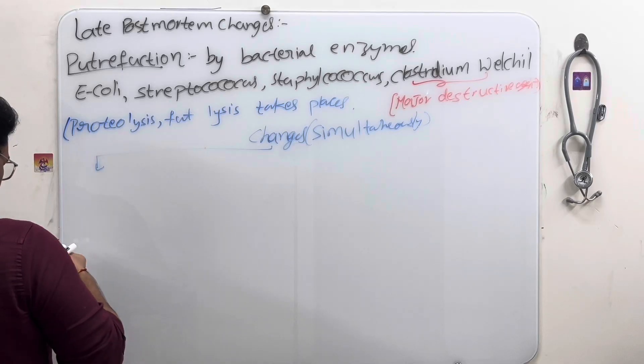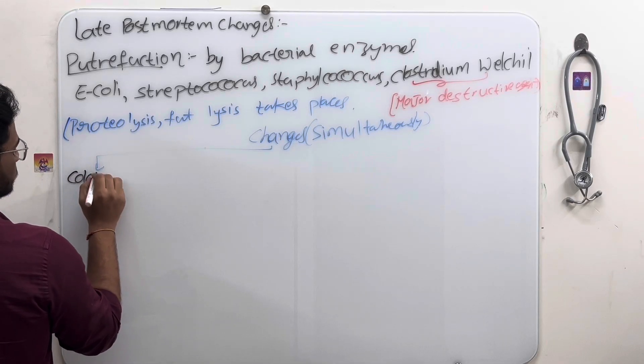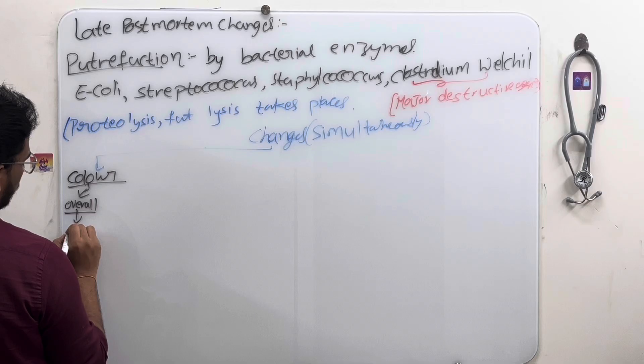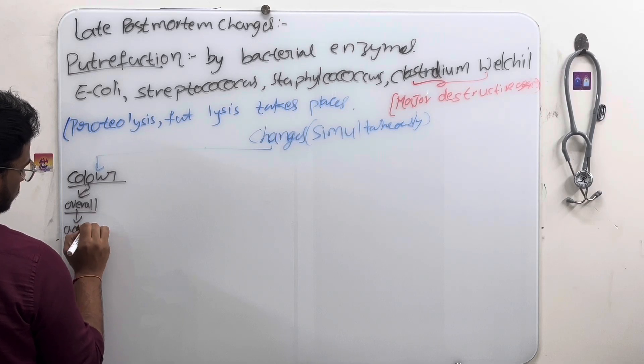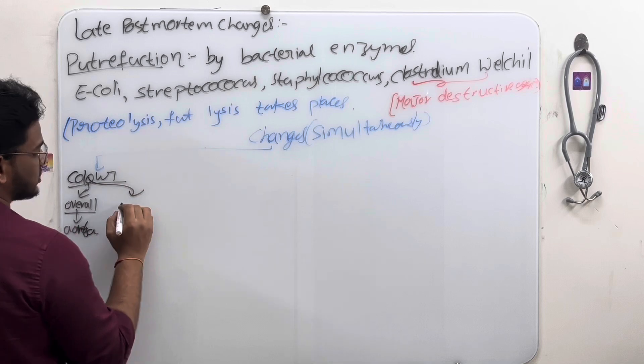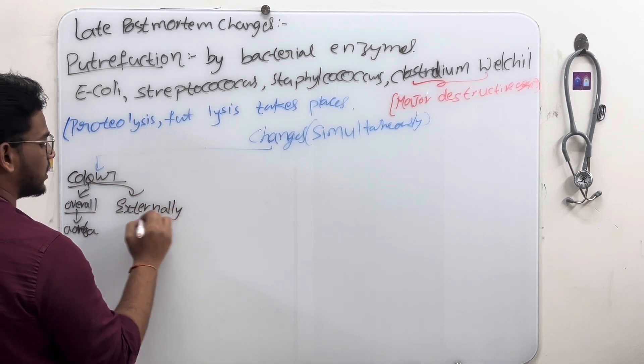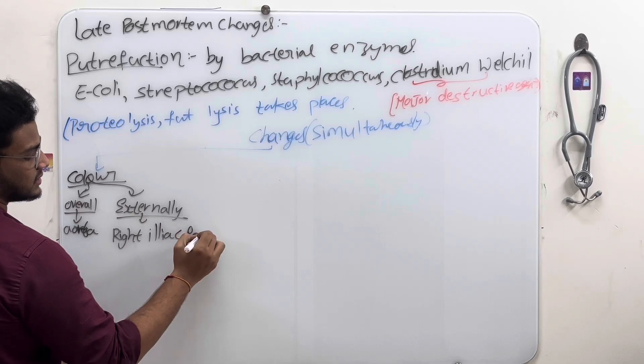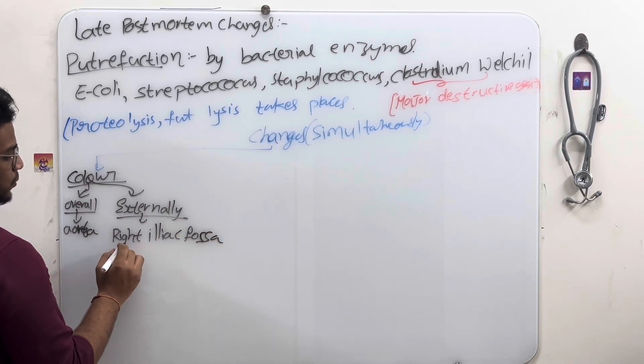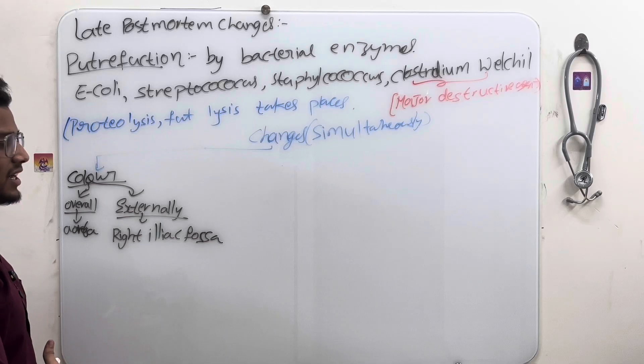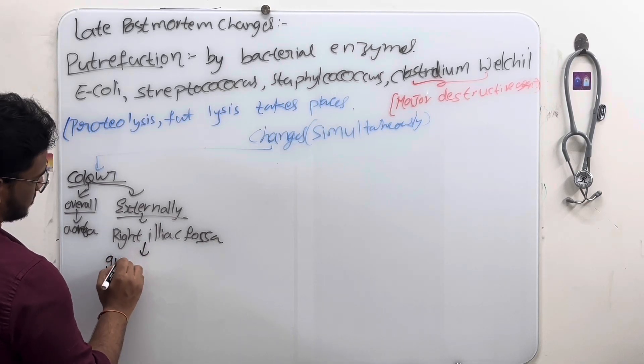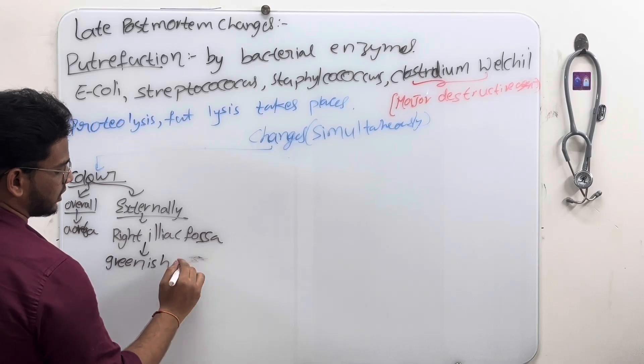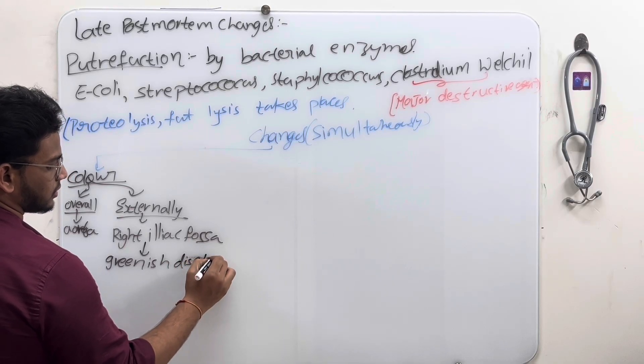First color change. Overall, first color change is observed in ileum, but externally is important. Externally we will observe at right iliac fossa where bacteria is in cecum. We will find at right iliac fossa greenish appearance, greenish discoloration will be seen.